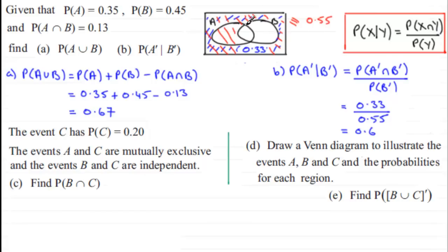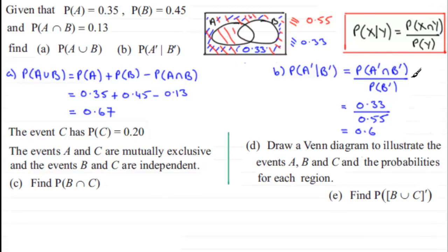Directly from the Venn diagram: we restrict to the red region where B did not occur, with probability 0.55. Within that region, we look for where A also did not occur — the blue outside region with probability 0.33. Comparing blue to red: 0.33 / 0.55 = 0.6, same result.